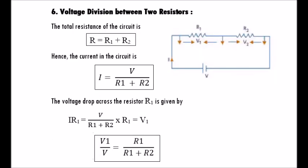Voltage division between two resistors: considering a circuit with only two resistors connected in series with supply voltage V, the total resistance is R equals R1 plus R2. The current in the circuit is I equals V divided by (R1 plus R2). The voltage drop across R1 is V1 equals V into R1 divided by (R1 plus R2), so V1 over V equals R1 over (R1 plus R2).